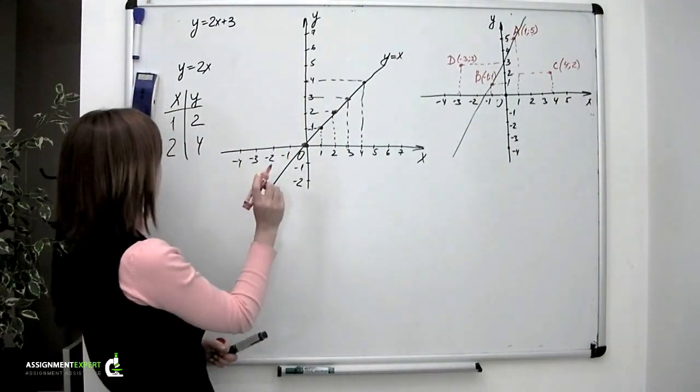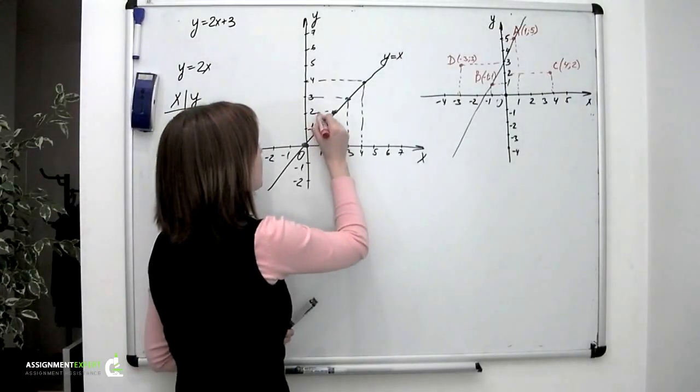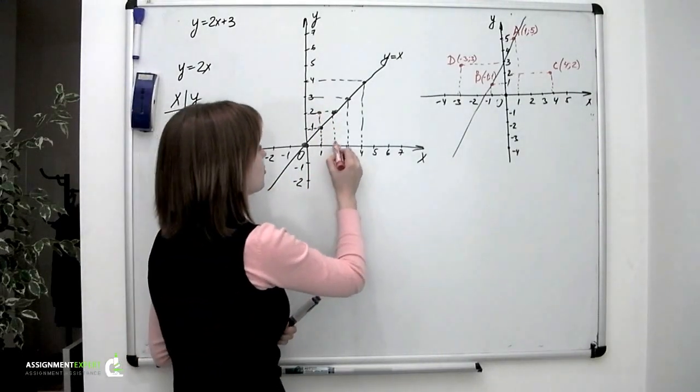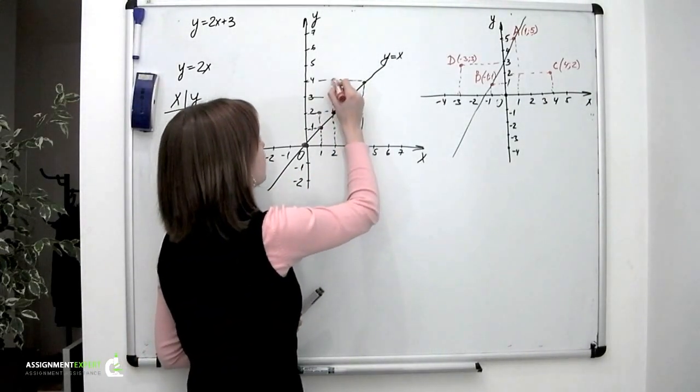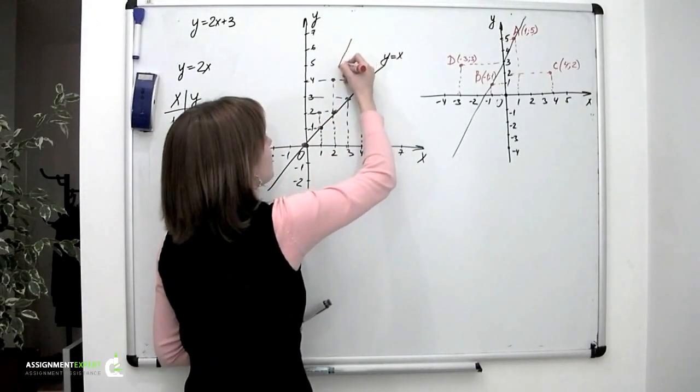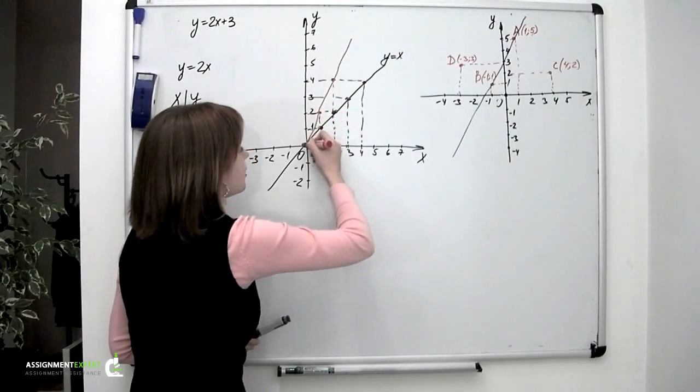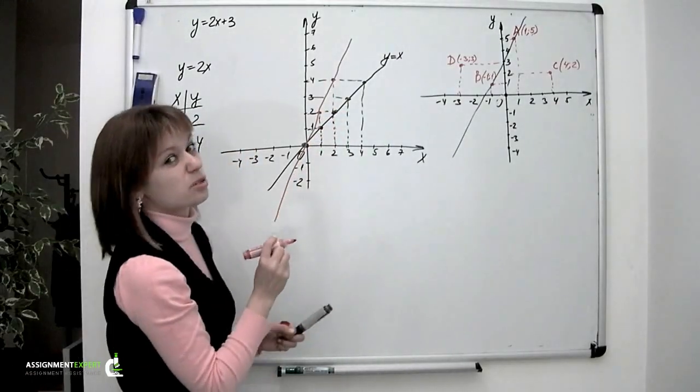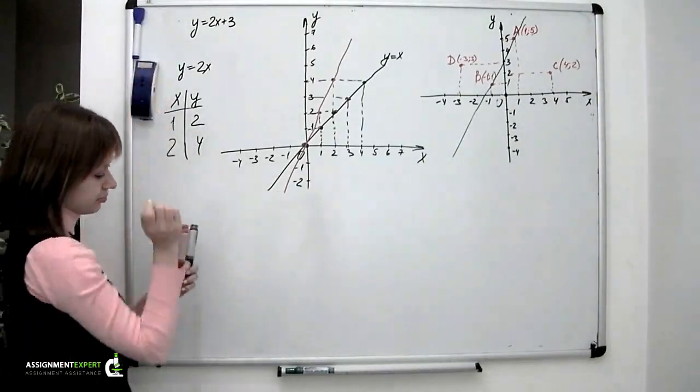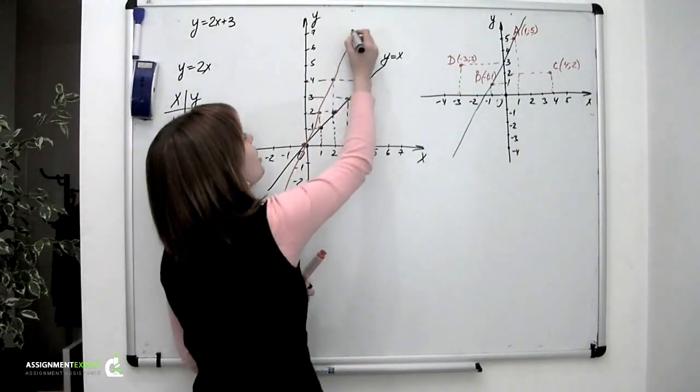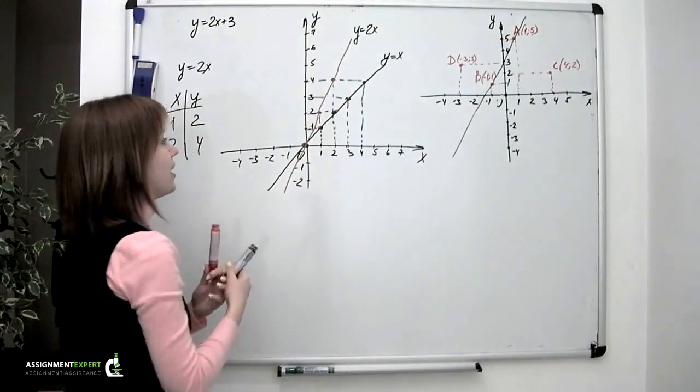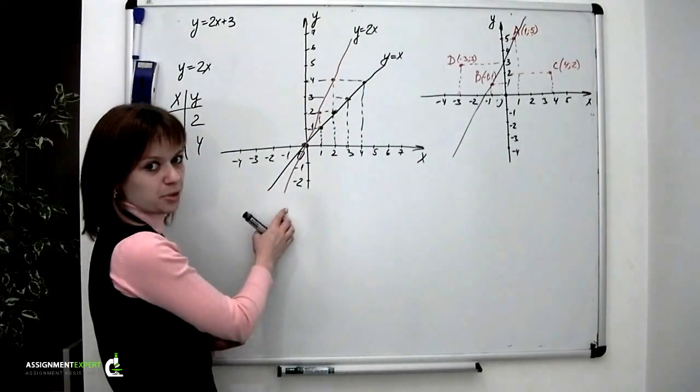Let us mark these points on the plane and graph this line. Here comes the first point with coordinates 1 and 2, and then there is a second one with coordinates 2 and 4. We have two points, we are connecting them. Carefully... this line was supposed to be straight. I tried my best. Now this line is described by an equation y equals 2x, and as you can see, it is steeper than the first one.